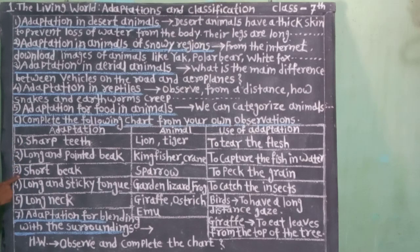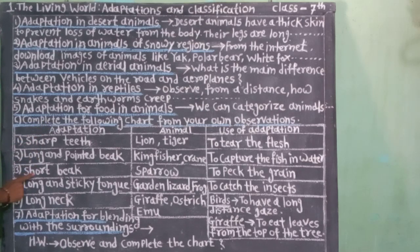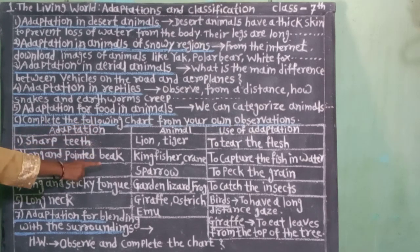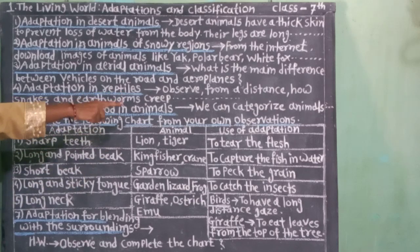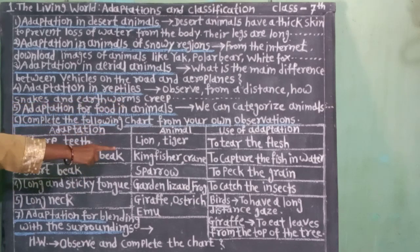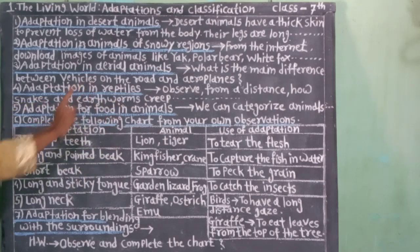Number 3. Adaptation: short beak. Animal: sparrow. Use of adaptation: to pick the grain.